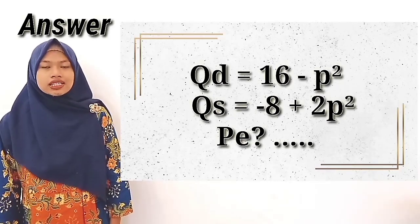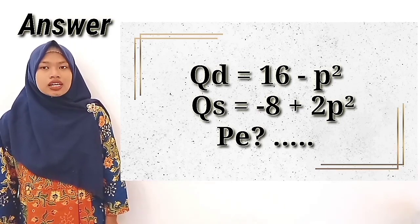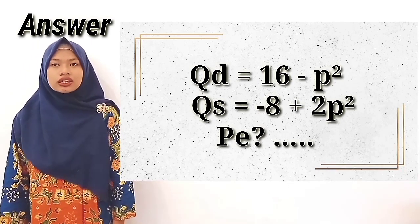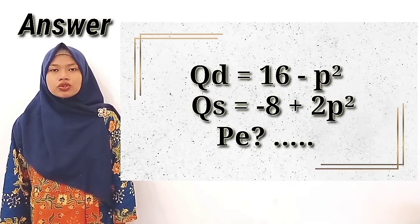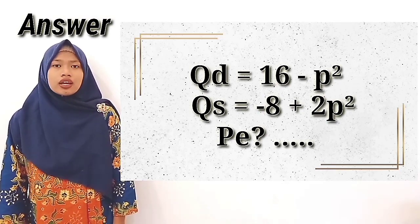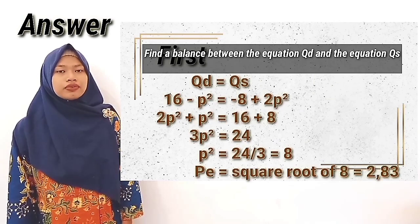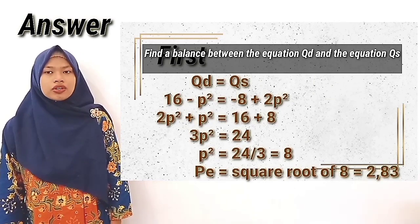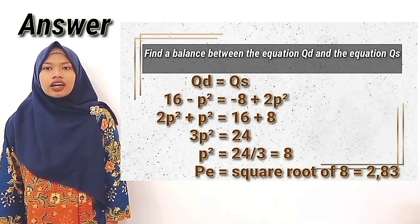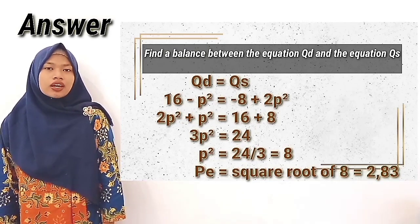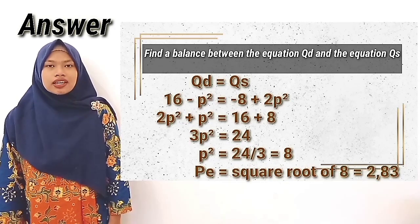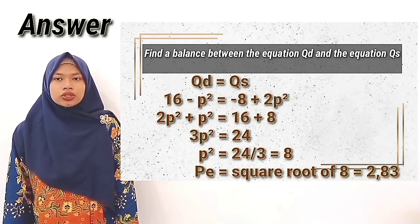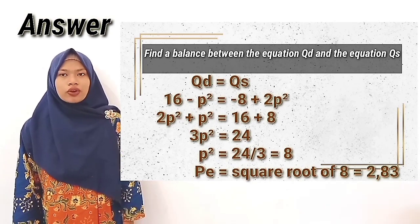At what price will market equilibrium occur? The answer: QB equals 60 minus P squared, and QS equals negative 4 plus 2P squared. First, find the balance between the demand equation QB and the supply equation QS. QB equals QS: 60 minus P squared equals negative 4 plus 2P squared.